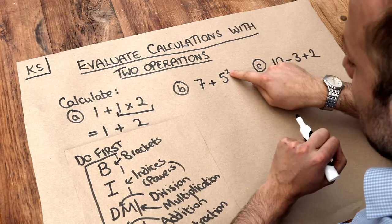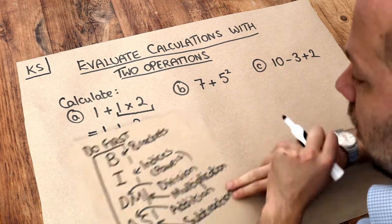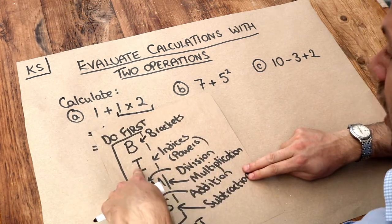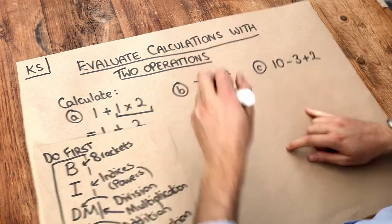So what goes first? Well, we can see indices, otherwise known as powers, comes before addition, which is at the bottom here. So we've got to do this power first.